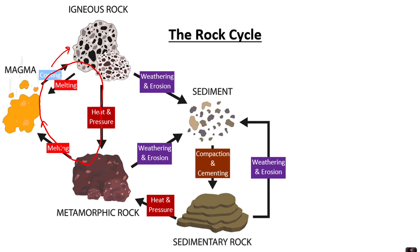Something might not stay as igneous rock forever — it might weather and turn into sedimentary rock, or it might go under heat and pressure to turn into metamorphic rock. This is what the rock cycle is describing: the changes in these rocks, and this will take hundreds of thousands if not millions of years.